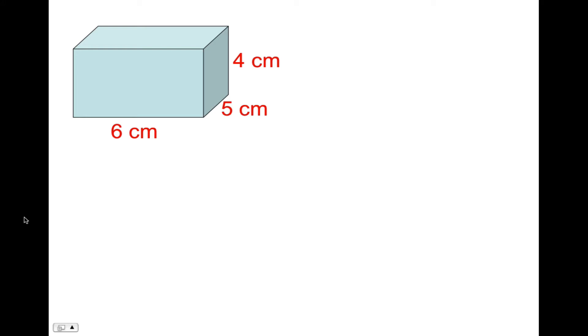Here's a rectangular prism and the net of a rectangular prism. If we were to draw it, it would look something like this. So if we were to fold that up, if that was made of cardboard and we folded it up, we would get a box with dimensions of 6 centimeters by 5 centimeters by 4 centimeters. So our first job is to try and label the sides of this net with the proper dimensions.